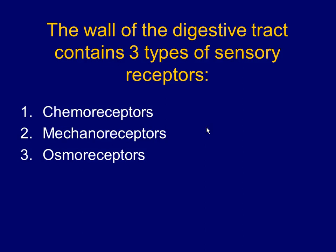The wall of the digestive tract has three types of sensory receptors. Chemoreceptors detect chemicals — glucose, sodium, potassium, magnesium, calcium, protein and amino acid levels. Mechanoreceptors detect physical changes, primarily stretch — is the stomach empty or full of tension? Like baroreceptors for blood pressure, these detect stretch. Osmoreceptors detect water concentration.